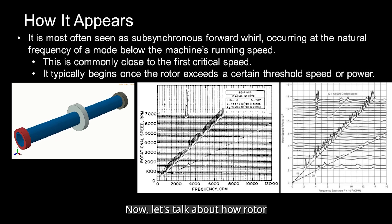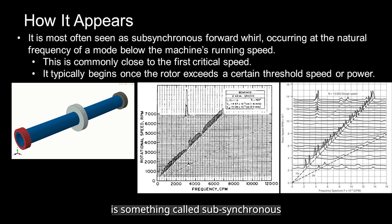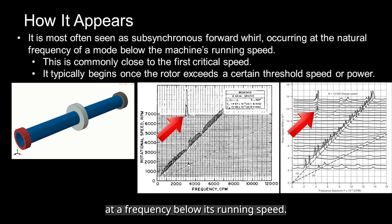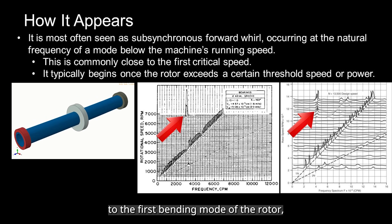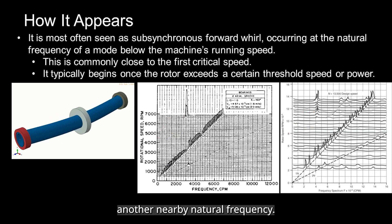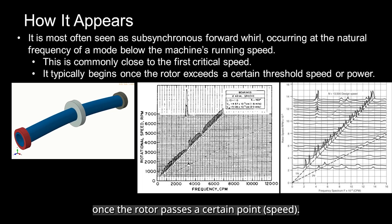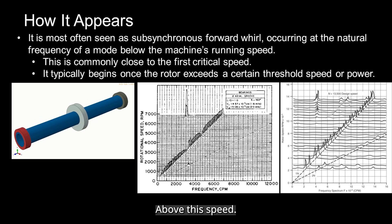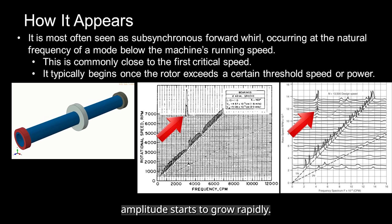Now let's talk about how rotor instability actually appears in machines. The most common signature is something called sub-synchronous forward whirl — the rotor starts to whirl at a frequency below its running speed. This unstable whirl is usually tied to the first bending mode of the rotor, or sometimes another nearby natural frequency. It does not happen at all speeds; it typically starts once the rotor passes a certain point, called the instability threshold, or the onset speed of instability. Above this speed, the system begins to feed energy into the whirl motion, and vibration amplitude starts to grow rapidly.